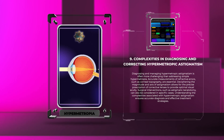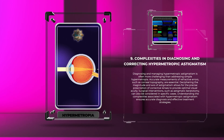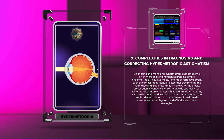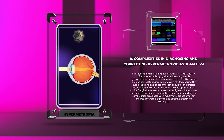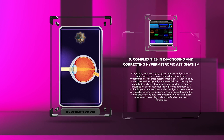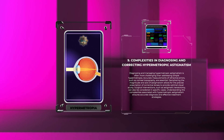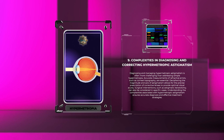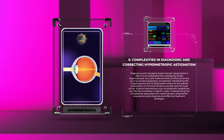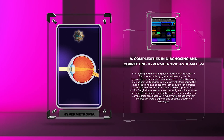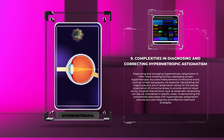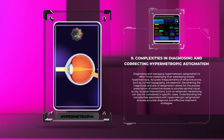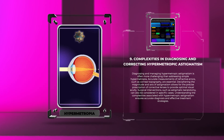Deciphering the magnitude and axis of astigmatism allows for the precise prescription of corrective lenses to provide optimal visual acuity. Surgical interventions, such as astigmatic keratotomy, can also be considered in specific cases. Understanding the complexities associated with hypermetropic astigmatism ensures accurate diagnosis and effective treatment strategies.